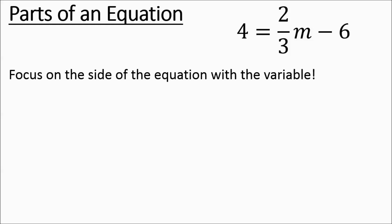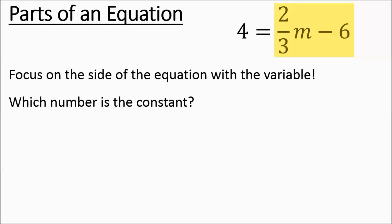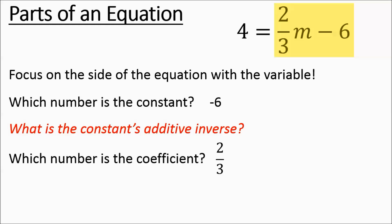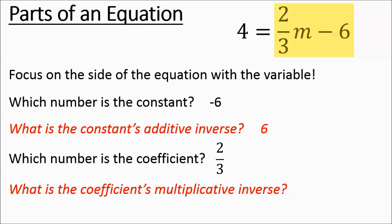We have another equation. We're going to tune into the right side. The constant is the number by itself — it's going to be the negative 6. The coefficient is what's multiplying by the variable; the coefficient is 2 thirds. The additive inverse of negative 6 would be a positive 6, and the multiplicative inverse of 2 thirds is going to be 3 halves.